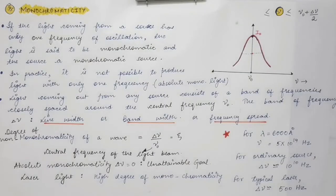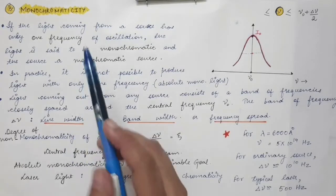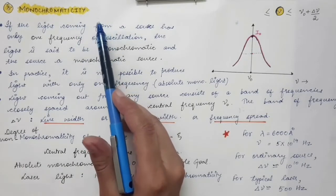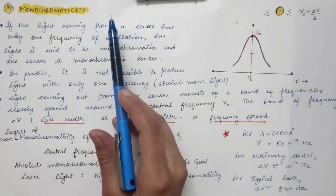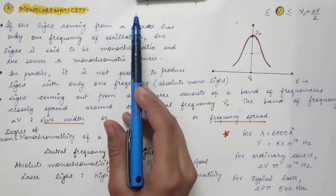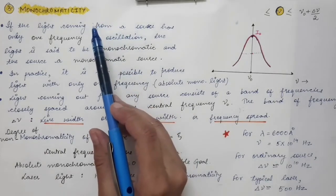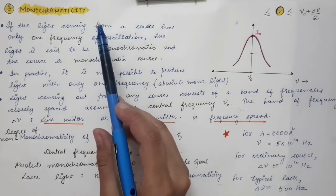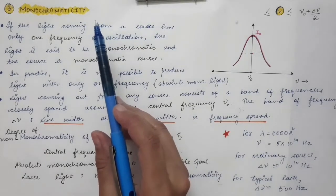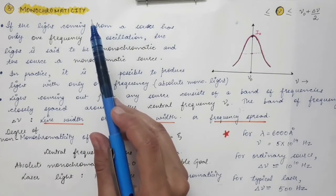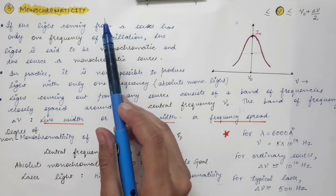The next property of laser light is its high degree of monochromaticity. A monochromatic source is any source that emits radiation of a single frequency or single wavelength. The light emitted by such a source is said to be monochromatic light. However, in actual practice, such sources are not possible to construct.